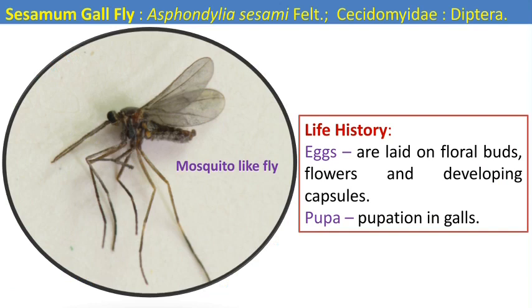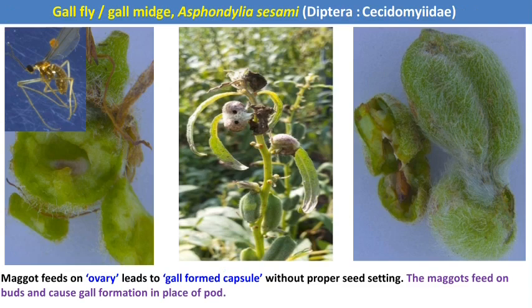The next pest is sesame gall fly (gall midge). It is also a Dipteran pest, and the fly looks like a mosquito. After mating, the female fly lays eggs on floral buds, flowers, and developing capsules. The maggots are the damaging stage. After development, the maggots go into pupation inside the galls. The maggots feed on the ovaries or developing seeds, leading to gall formation in capsules without proper seed setting. Instead of pod formation, gall formation occurs — this is the characteristic symptom of sesame gall fly. Yield is directly reduced.